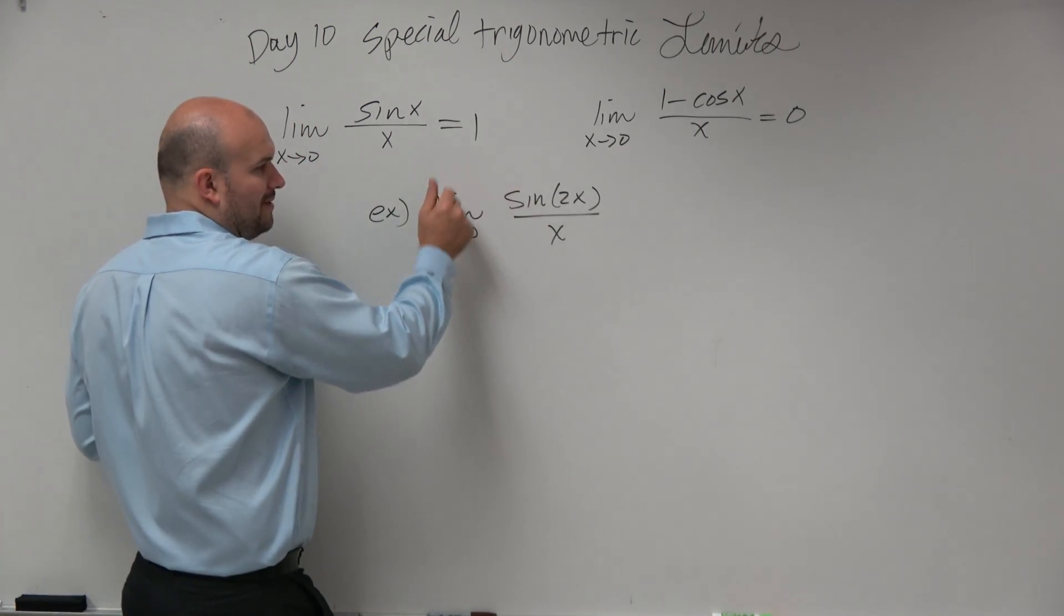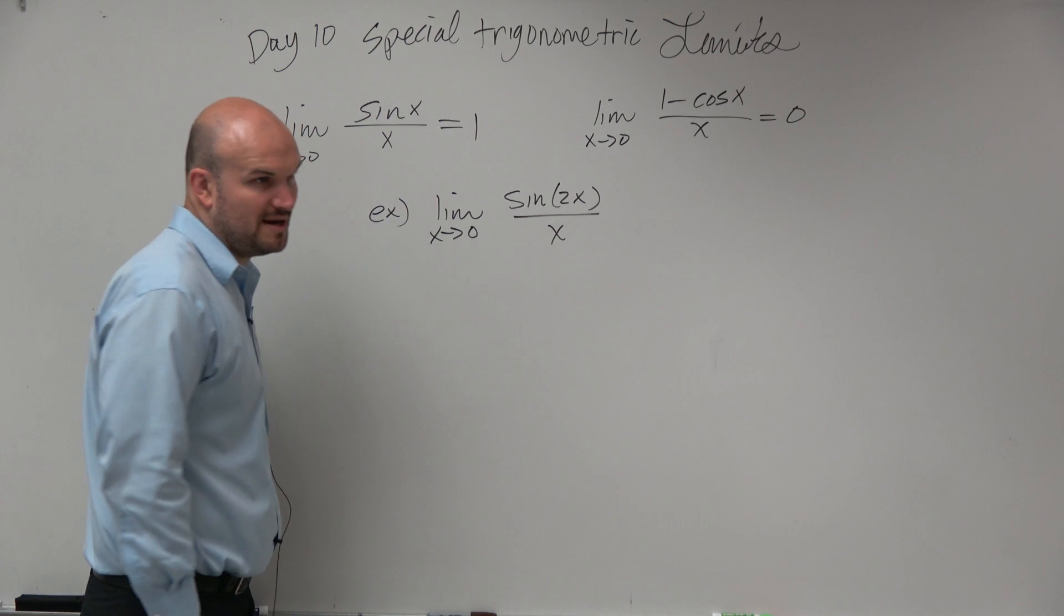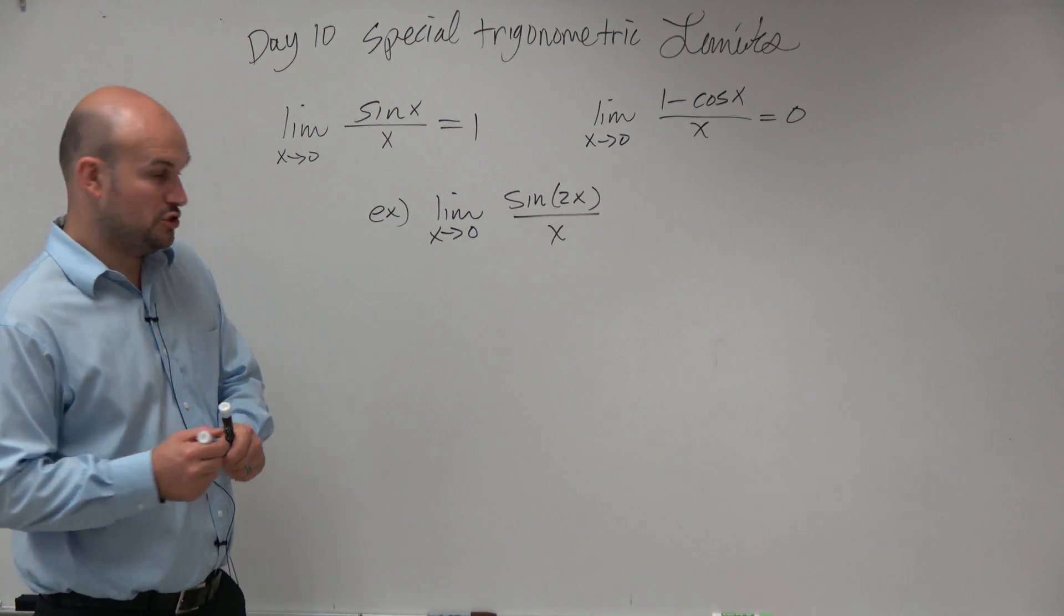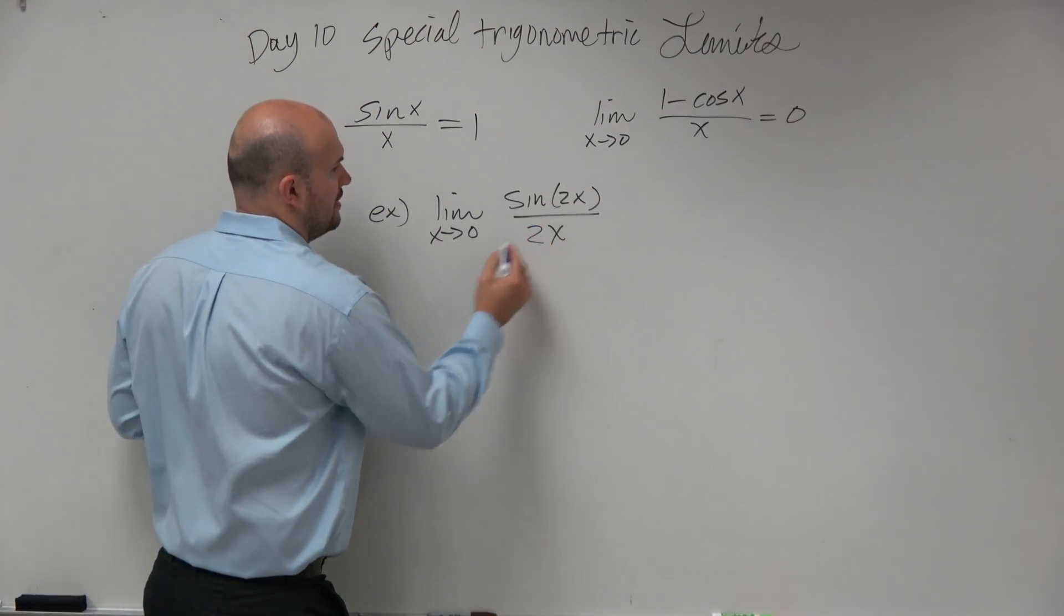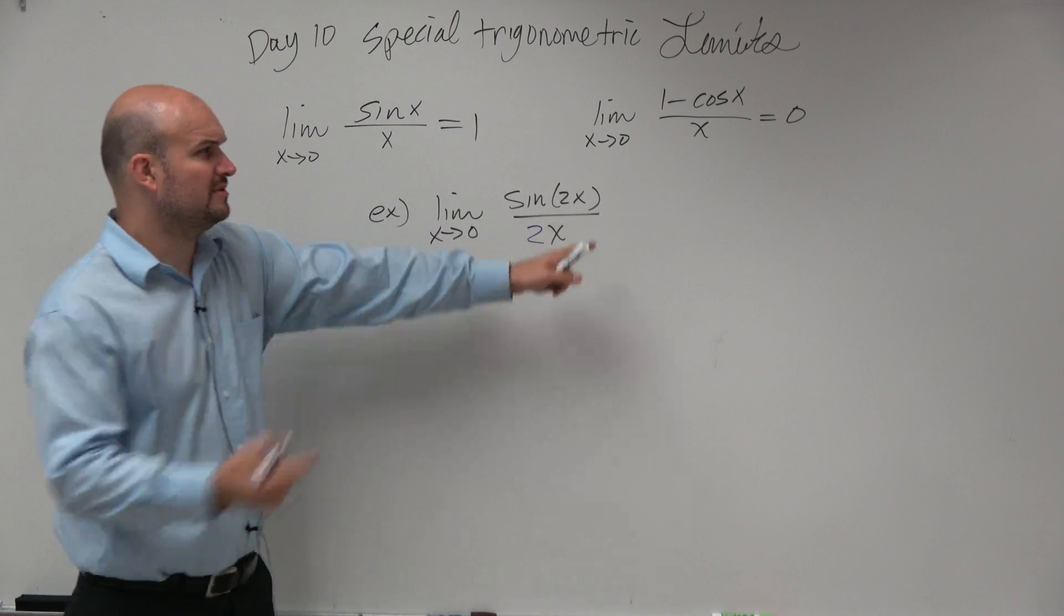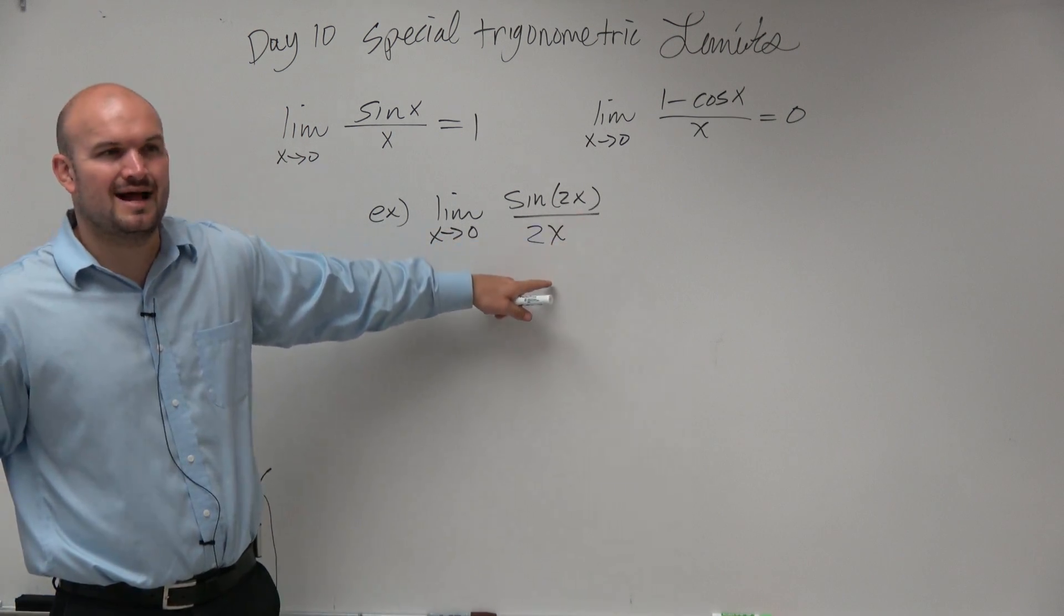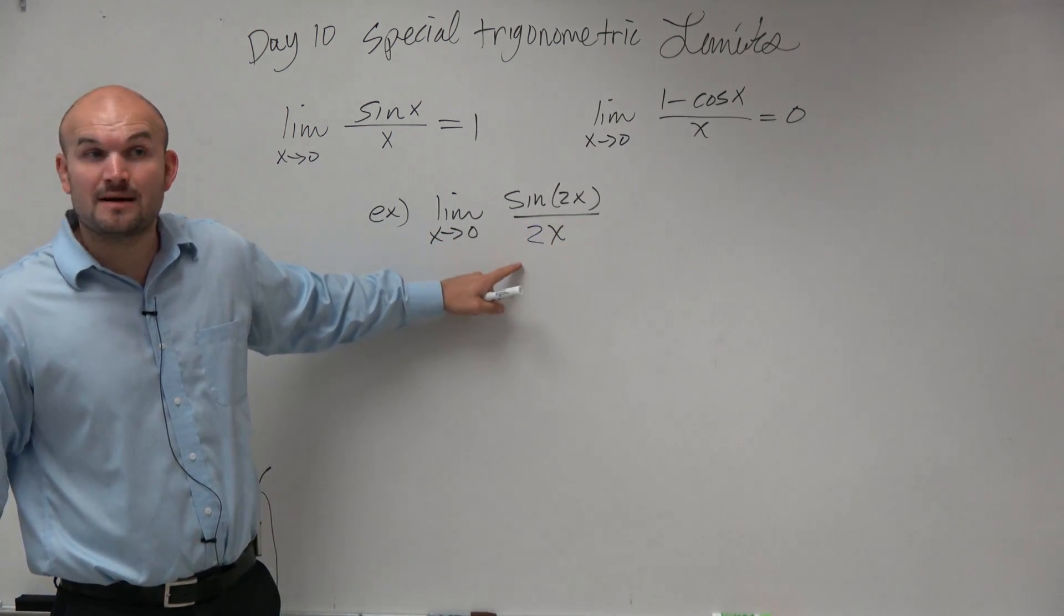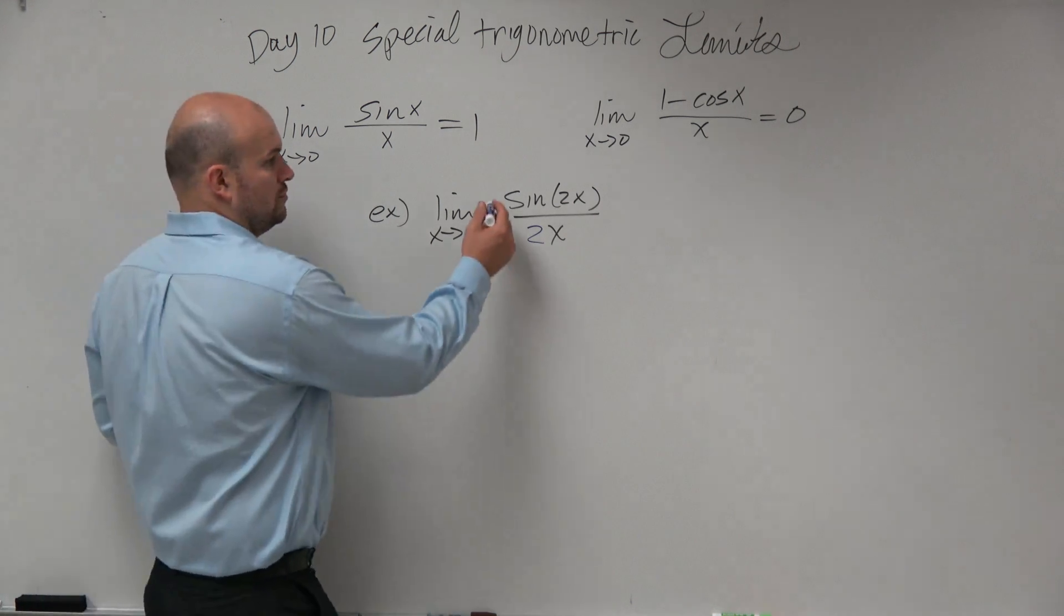So if I want to get this to be 2x, what do I need to multiply that x by? 2. And remember the problem we just did - you can't just multiply a number in the denominator and say it's the same. Whatever you do in the denominator, you have to do in the numerator.